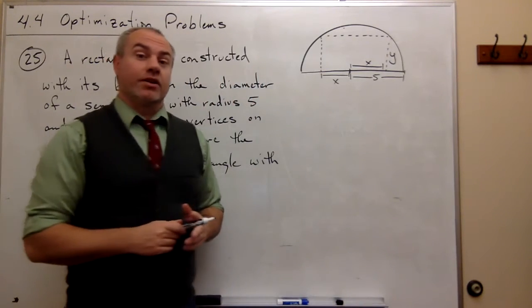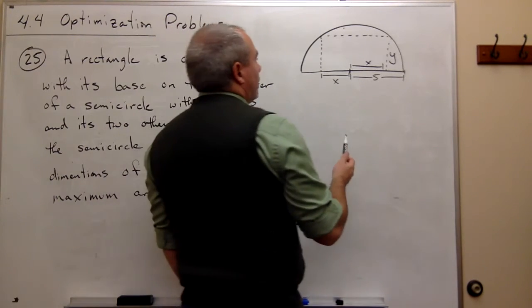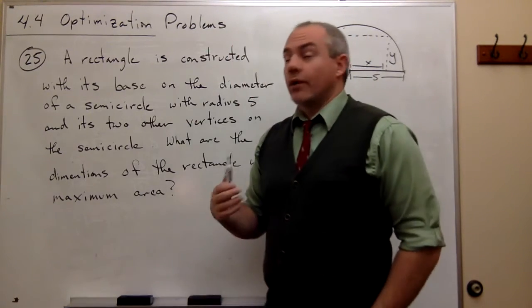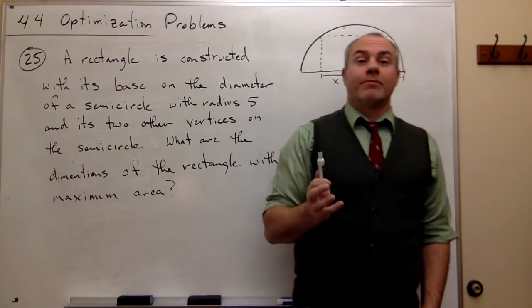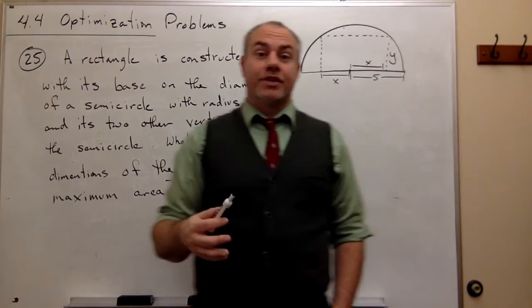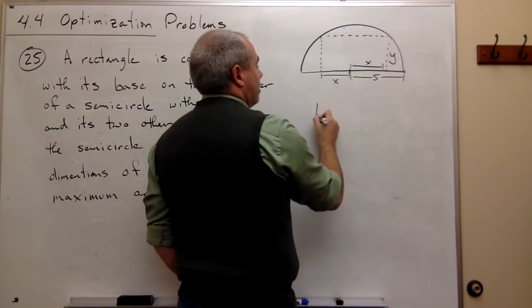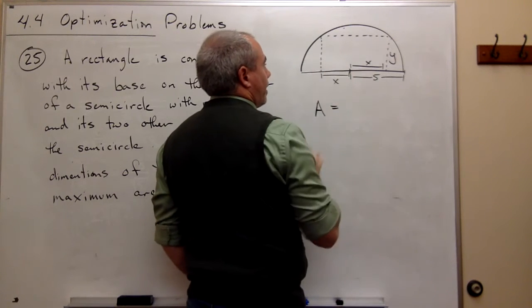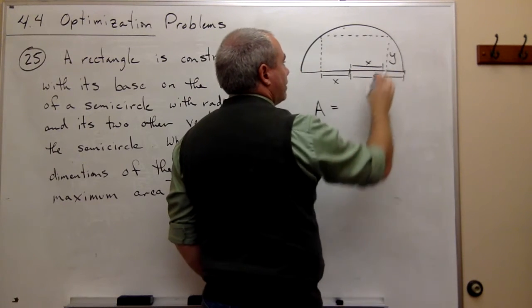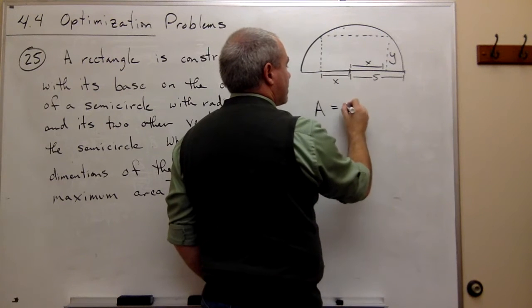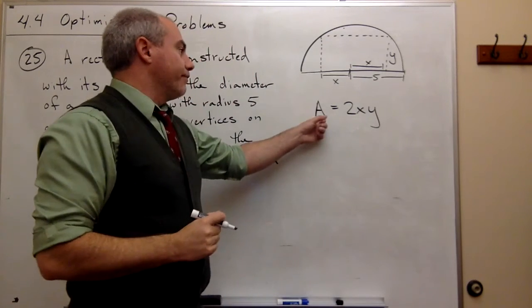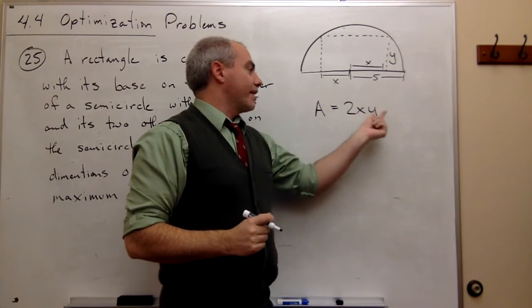Now, with our picture set up, we ask: what is it that we're trying to optimize? We already said we're trying to optimize the area of the rectangle. So we need a formula for the area of this rectangle. The area is length times width. The width is 2x and the height is y. So the area of this rectangle is 2x times y.